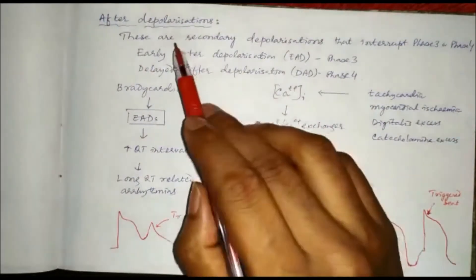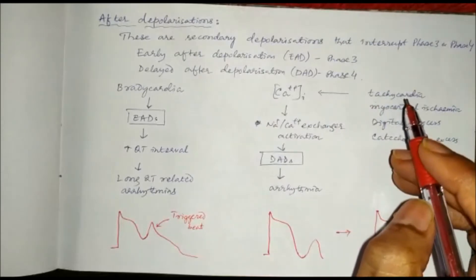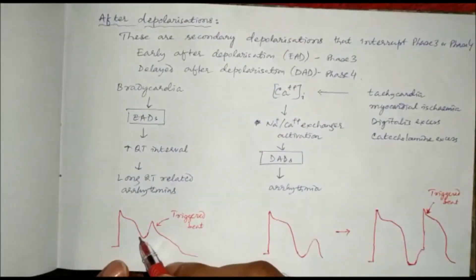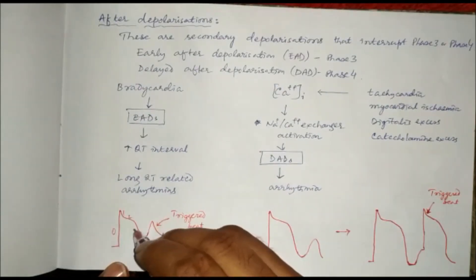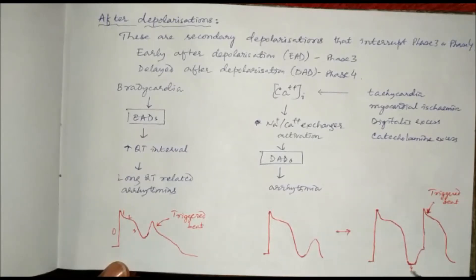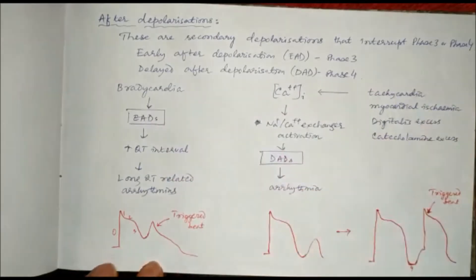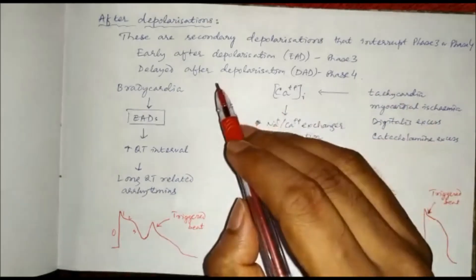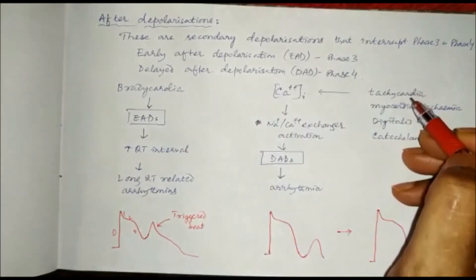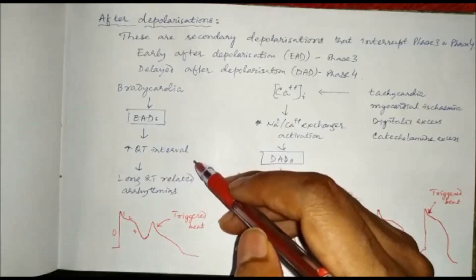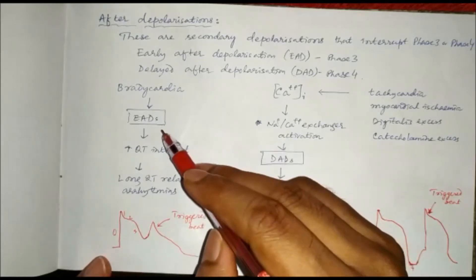The other cause of abnormal impulse formation is after depolarizations — these are secondary depolarizations. As discussed in our previous class, the relative refractory period can be our phase three or phase four. During phase three, if the secondary depolarizations occur, those are called early after depolarizations. And delayed after depolarizations occur during phase four. Early after depolarizations are triggered by bradycardia, whereas tachycardia triggers the delayed after depolarizations. Early after depolarizations mainly cause lengthening of the QT interval, so all long QT-related arrhythmias are due to early after depolarizations.